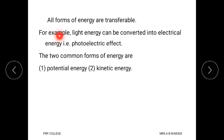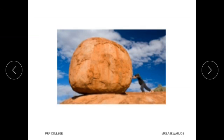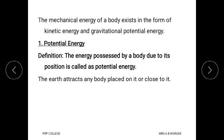Another example is that light energy can be converted into electrical energy, and that effect is known as the photoelectric effect. The two common forms of energy are potential energy and kinetic energy. For potential energy, observe this photograph: that stone is at rest position, it does not change its position, but it has some energy stored in it due to its position. That energy is called potential energy. The definition of potential energy is: the energy possessed by a body due to its position is called potential energy.